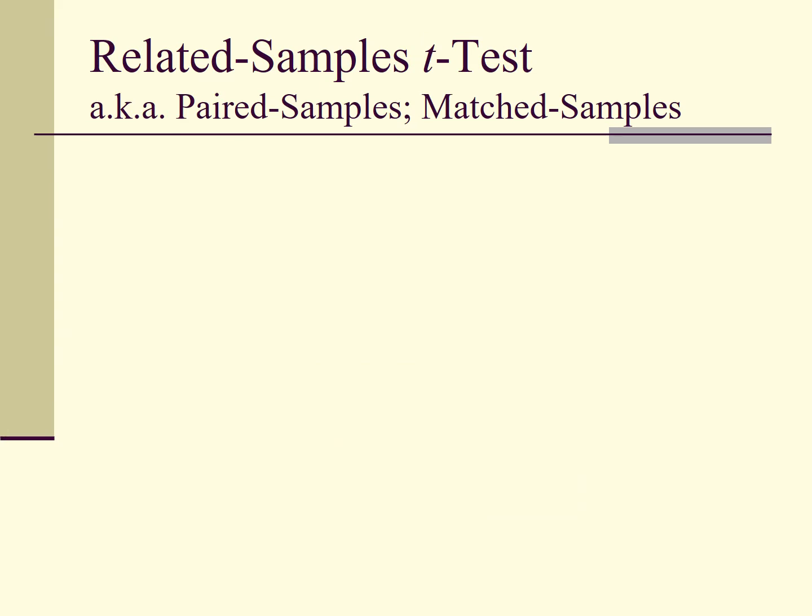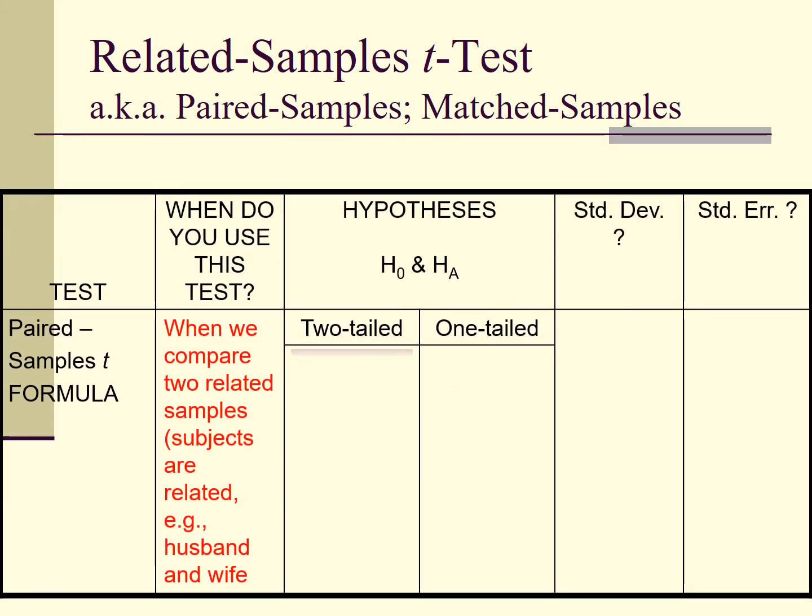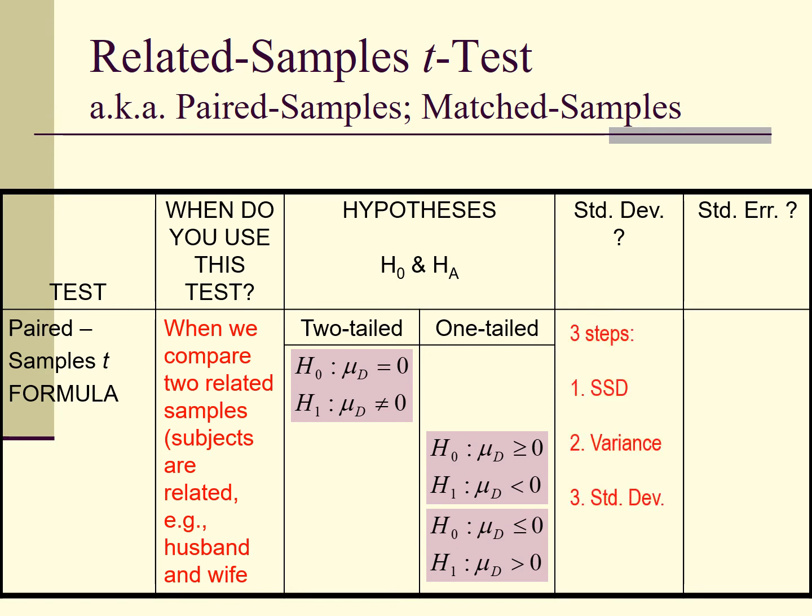For related samples t-test, it is also known as paired sample t-test or matched sample t-test. So here is how to form hypothesis for two-tailed test, how to form hypothesis for one-tailed test, how to compute the standard deviation, how to compute the standard error—one more step, then standard deviation—then how to compute the t-observe score.